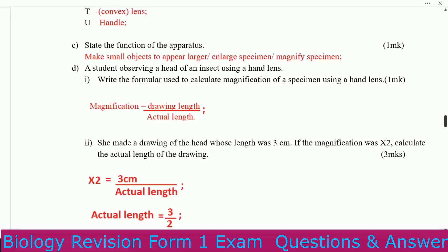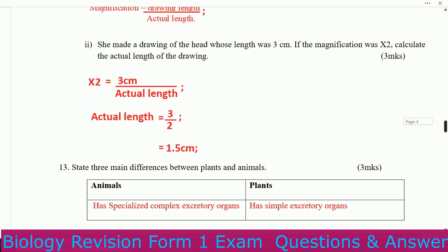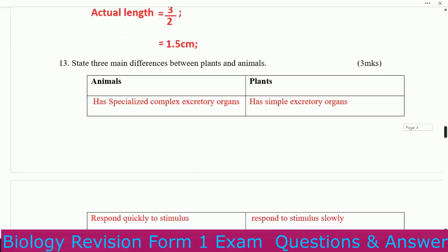Magnification is equal to drawing length over actual length. She made a drawing of the hand whose drawing length was 3 centimeters. If the magnification was times 2, calculate the actual length. Drawing length over actual length: 3 over 2 gives 1.5 centimeters.